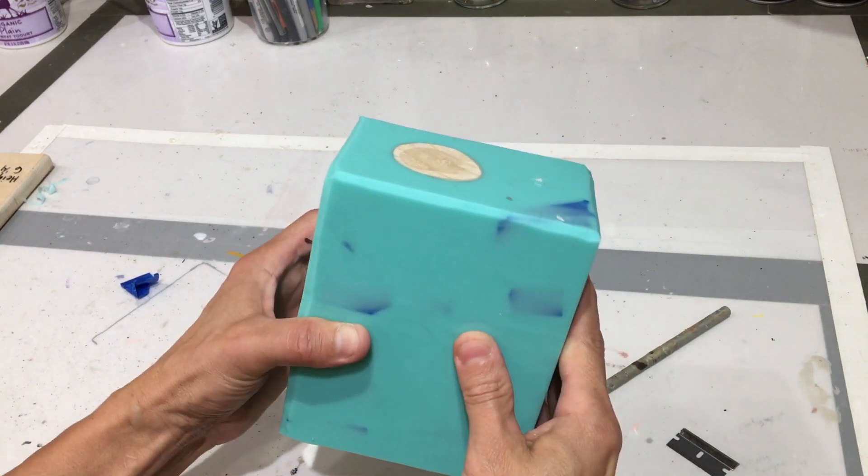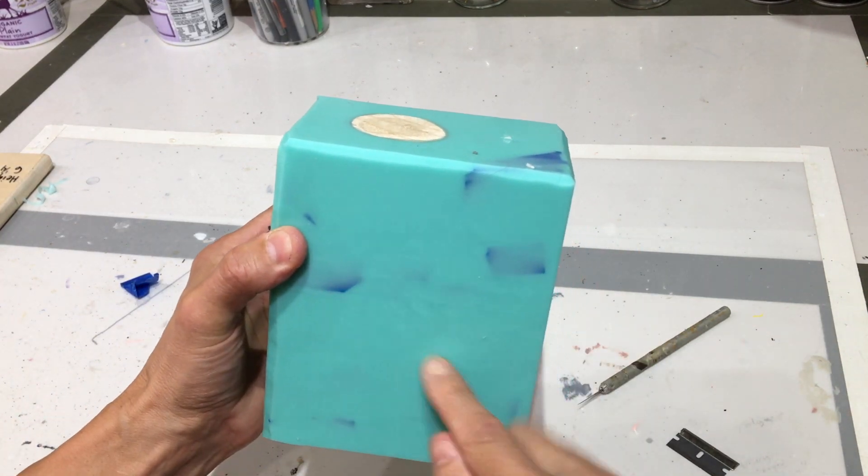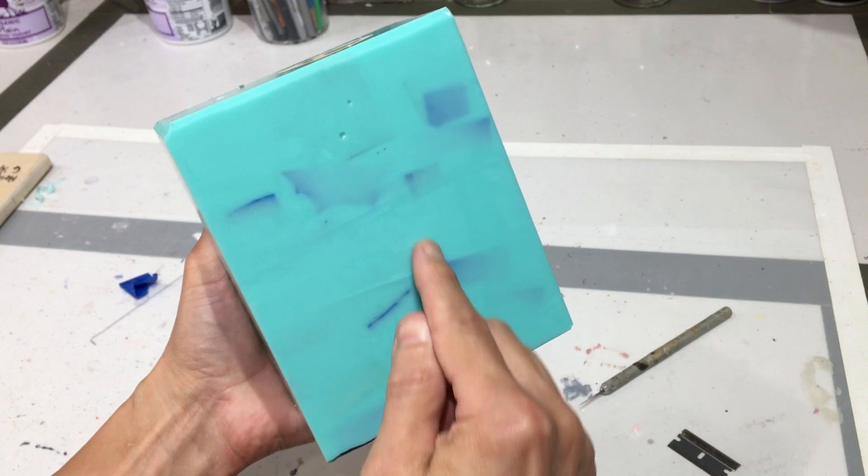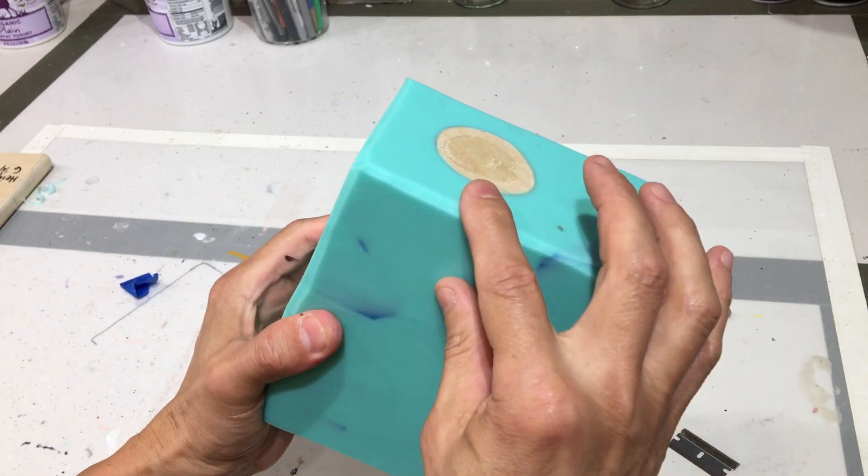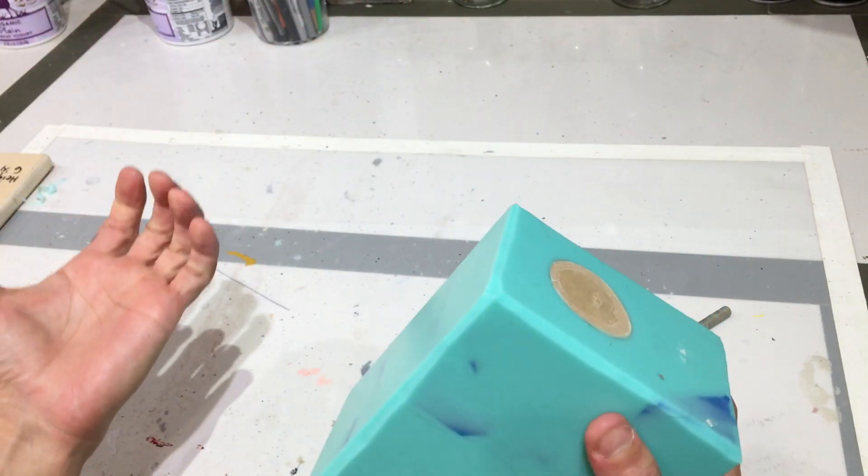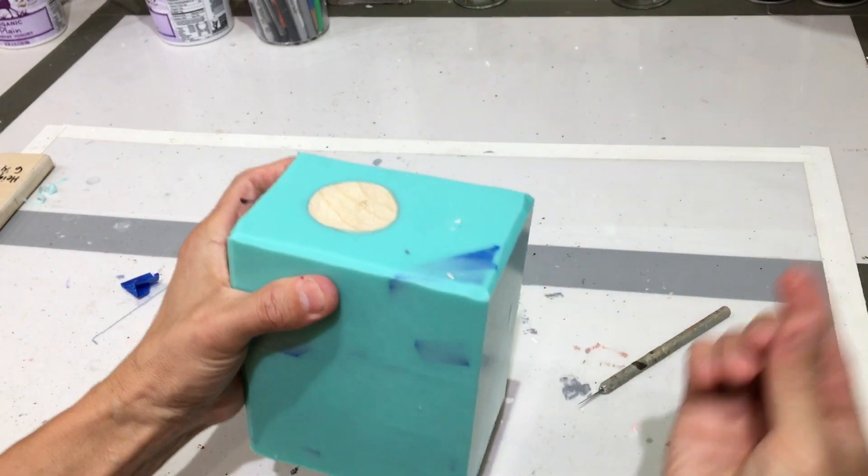So now we just have to slice this mold open here and here and try to follow those lines that we drew on the sculpture. And then the mold will split open, we pop the piece out.